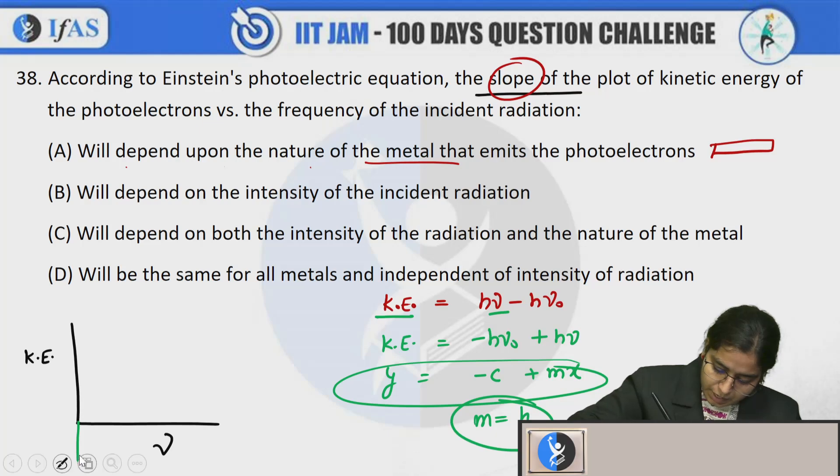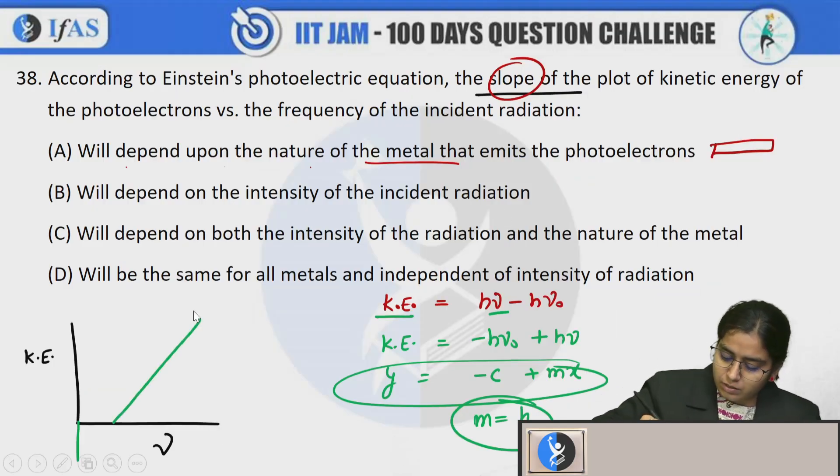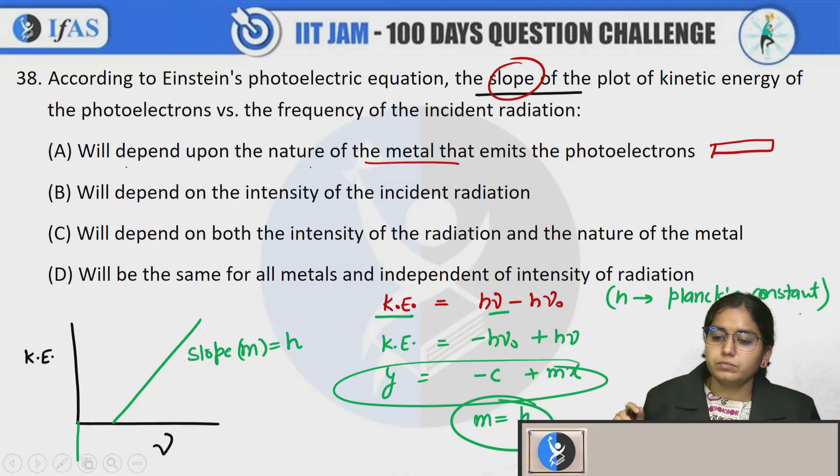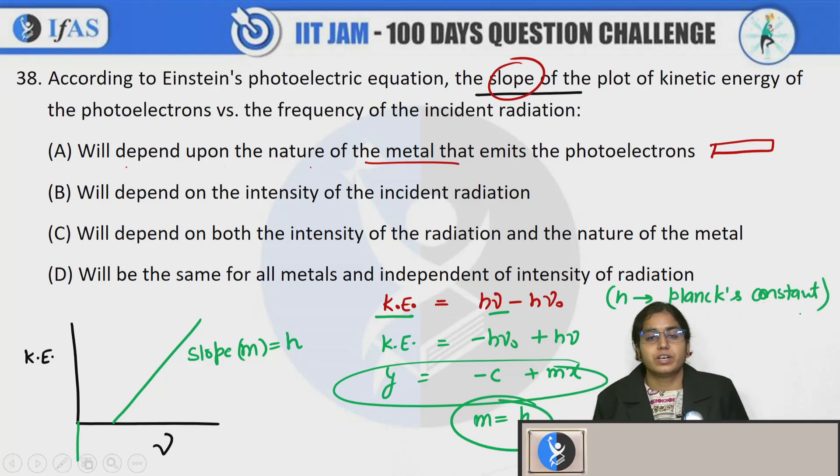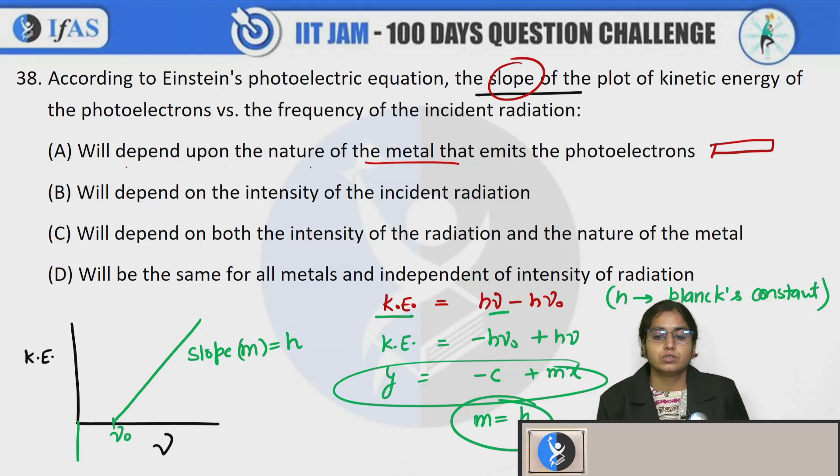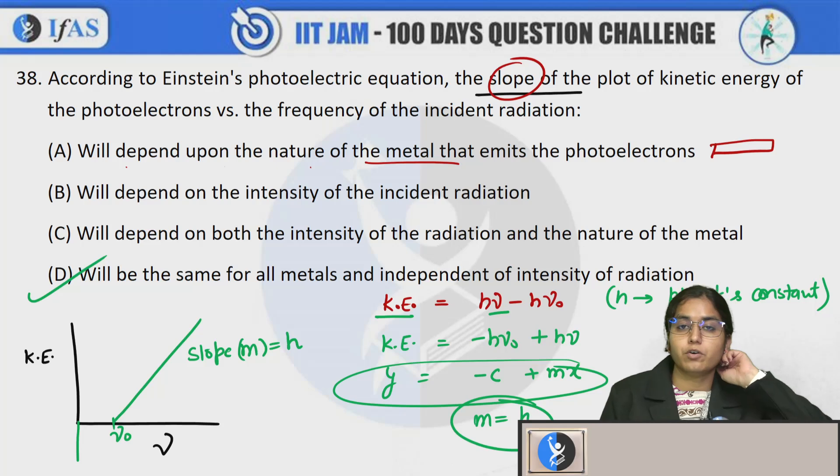The curve will have negative intercept on y axis. Slope is m which is h, and h is Planck's constant. If this is Planck's constant, so this slope remains same for all metals and it is independent of intensity.